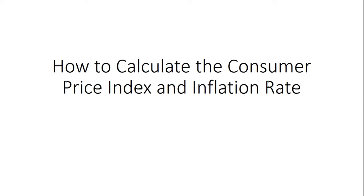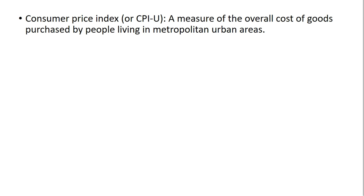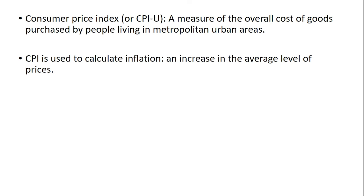Hello, in this video we're going to look at how to calculate the consumer price index and the inflation rate. We'll start with the definition of the consumer price index, which is technically the CPI-U. It's a measure of the overall cost of goods purchased by people living in metropolitan urban areas. The CPI is used to calculate inflation, which is just an increase in the average level of prices in the economy.